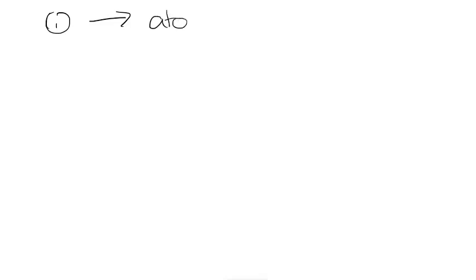So how would we answer a question if we came across this in an exam? Which we often will. I've narrowed it down to five things you need to include. The first thing to state is that across the period, the atomic radius decreases. Just by stating that, you can often get a mark. Then we need to start explaining why.